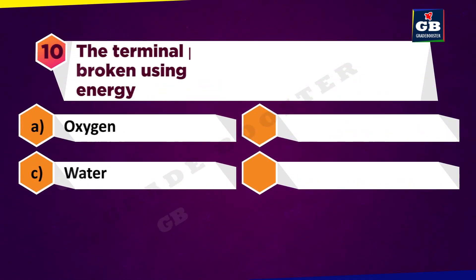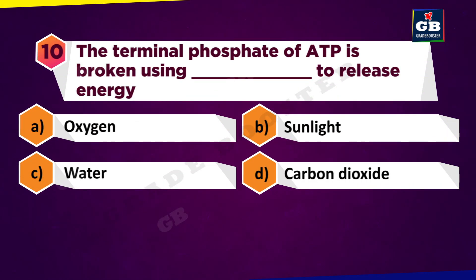The terminal phosphate of ATP is broken using ___ to release energy. A. Oxygen, B. Sunlight, C. Water, D. Carbon dioxide.